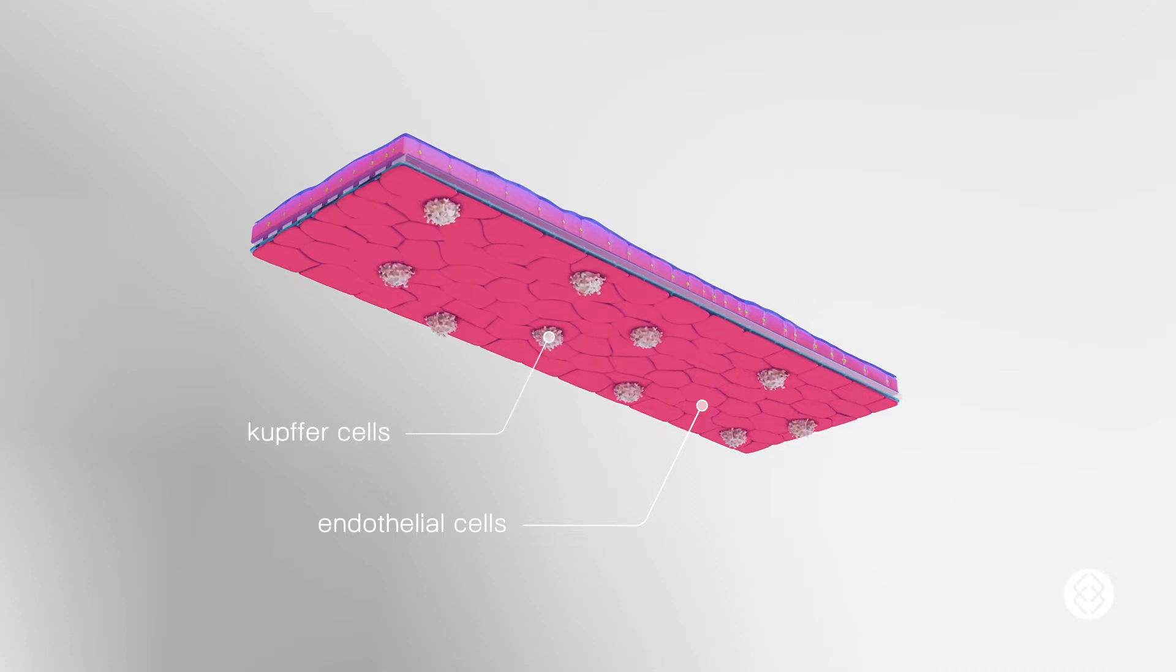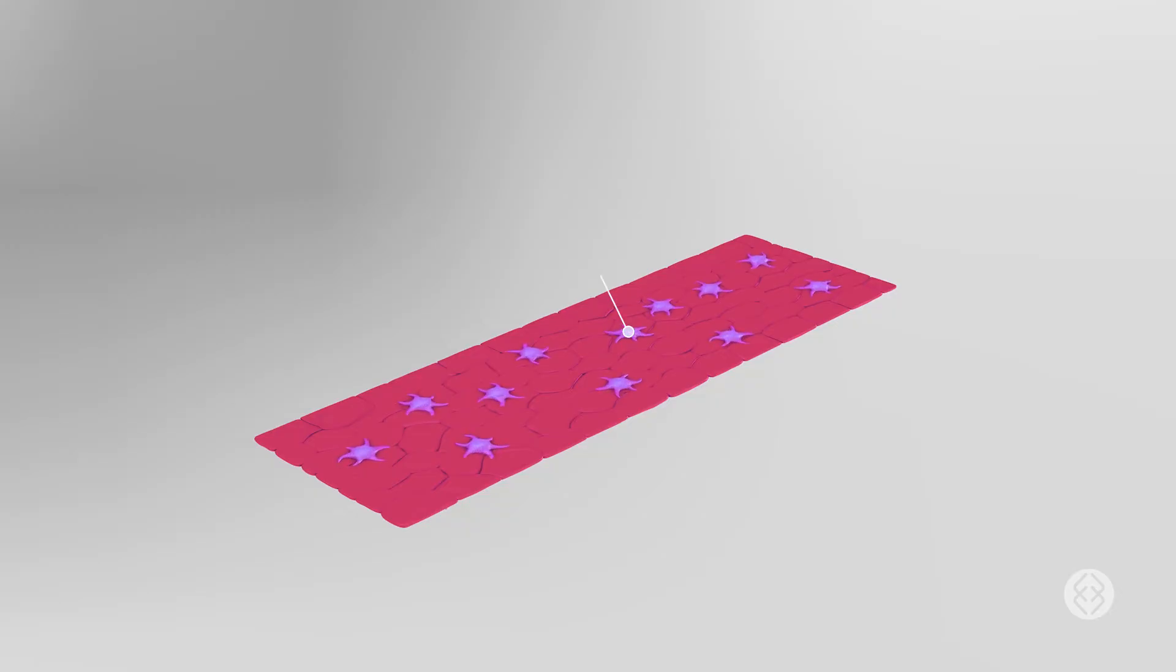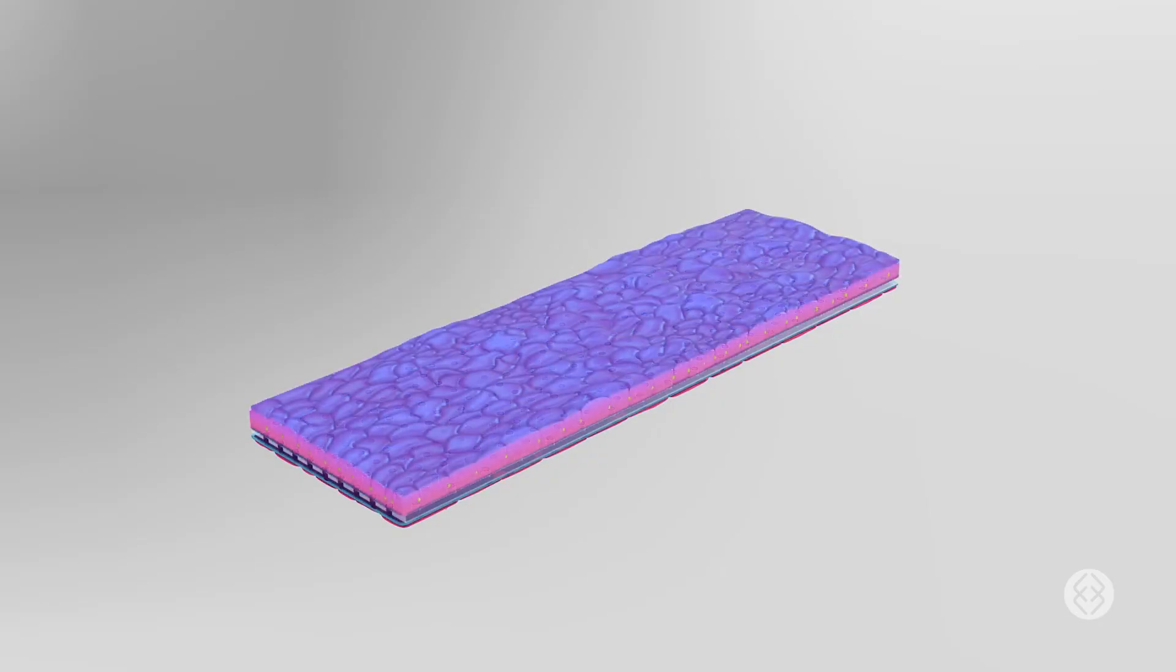Resident immune cells are below the endothelial cells, while hepatic stellate cells are above the endothelial cells. This recreates the arrangement of cell layers that exist in the human liver.